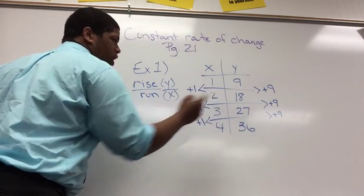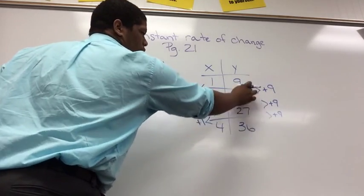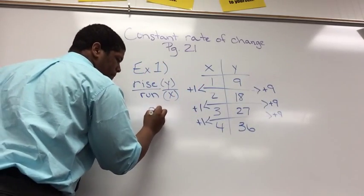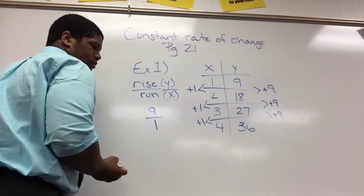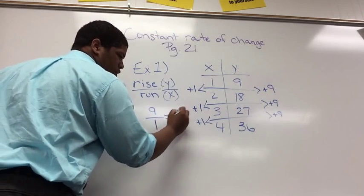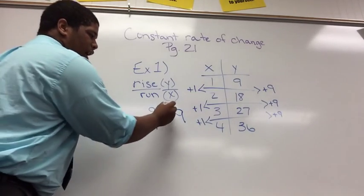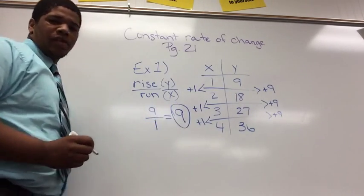So if I put my y over my x over here, I have my 9 over the change, which is 1, which can reduce to 9. And 9 is my constant rate of change.